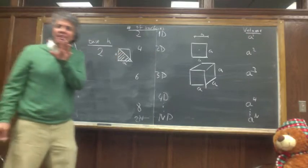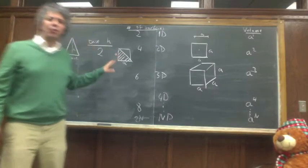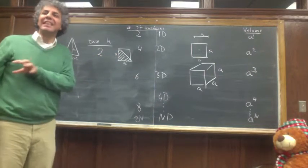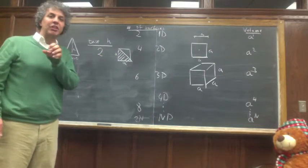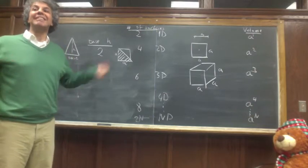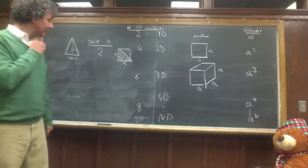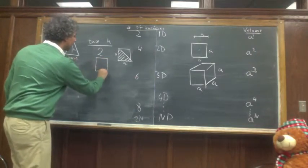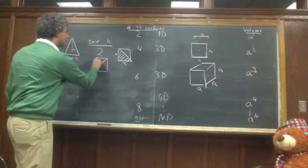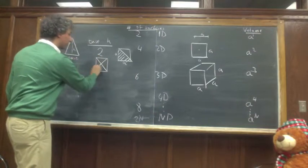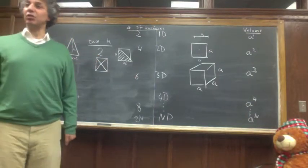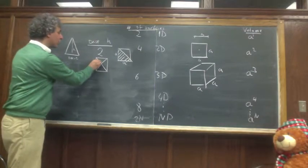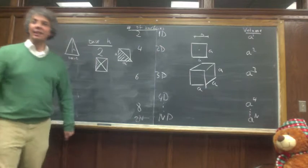So I'm going to do this slightly different. This is, of course, we all know in two dimensions, but I'm going to do it slightly differently, because the way I will do it we can extend it to higher dimensions. So I'm going to take my square and I'm going to break it into four. I'm going to go to the center and break it into four, and I will have four identical triangles.